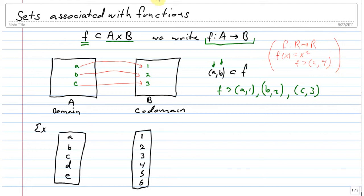So let's do an example of the way I want you to think about functions. So here, our A is the set {a, b, c, d, e}, and our B is the set {1, 2, 3, 4, 5, 6}.